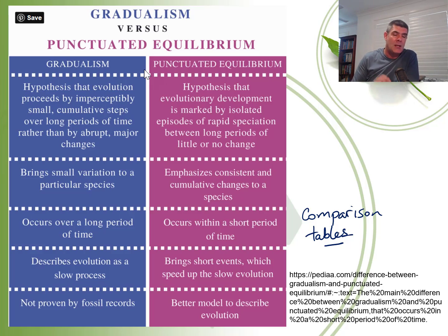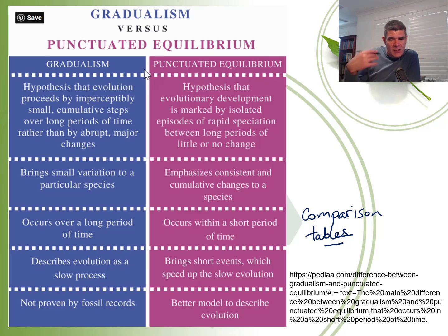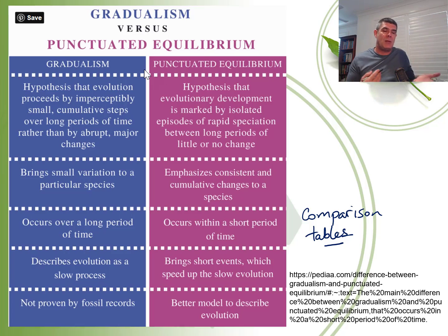Sometimes when writing long responses to questions with multiple aspects, you can leave things out or forget something, or be on a particular track when writing and not go back to check. A comparison table won't necessarily have the depth of information that a written paragraph response might have, but it can cut to the chase of the key points you need to make sure you include when comparing gradualism and punctuated equilibrium.